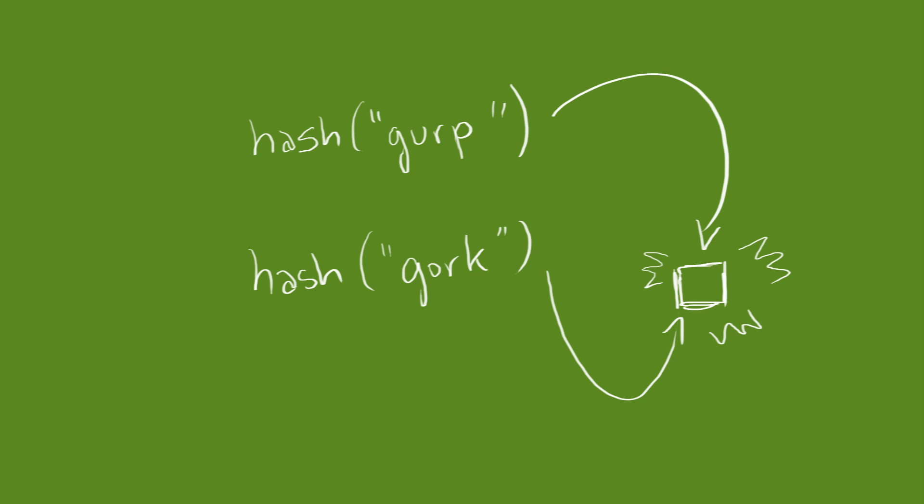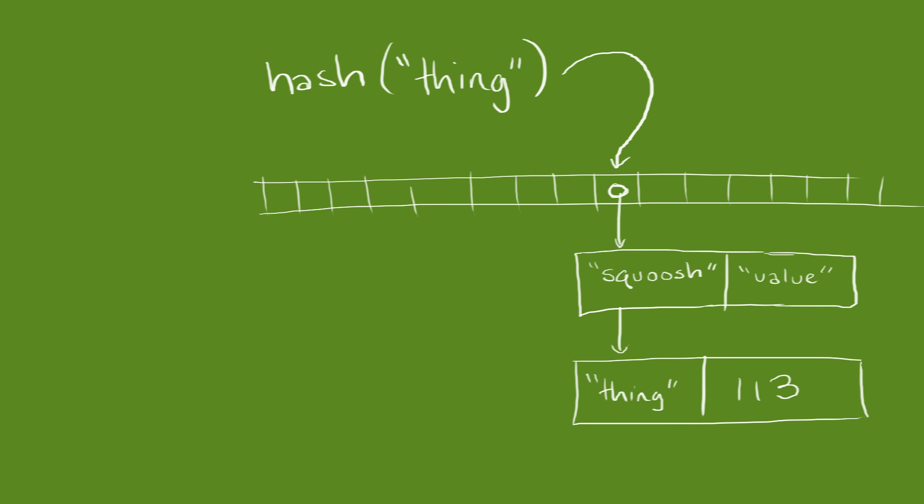The traditional way to deal with this is to treat each element of the array as the root of a linked list. When we search for items, we first hash it, then search for it in the linked list.